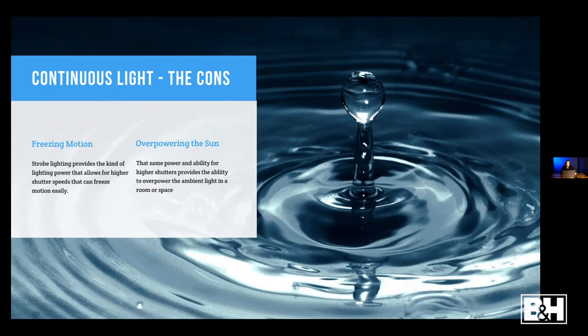The two main cons for photographers used to strobe lights are freezing motion and overpowering the sun. Strobe lighting provides the power for high shutter speeds that can freeze motion easily — like freezing a water droplet — which continuous lights can't match to that extreme. And with a space that has sunlight coming in, you can use strobe lights to overpower the sun for a film noir look by changing your shutter speed. That's not something you can do with continuous light.